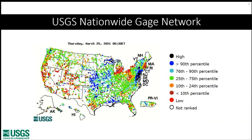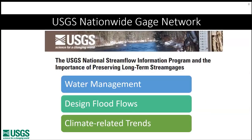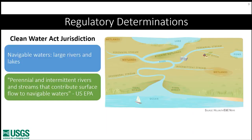This illustrates our complex relationship with water — we need enough but not too much, and we want to know when we're approaching either end, whether we have low flows or high flows. The USGS gauge network was developed largely for those purposes. A snapshot of water conditions from this March shows the network serves three primary purposes: water management, design flood flow for safety planning, and assessing climate-related trends that may affect future water availability and floods.